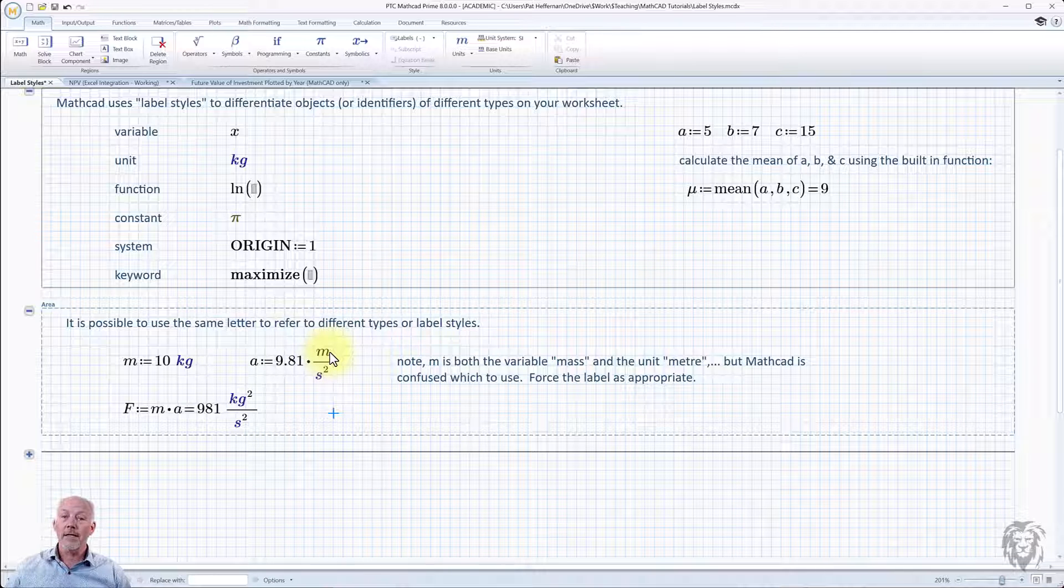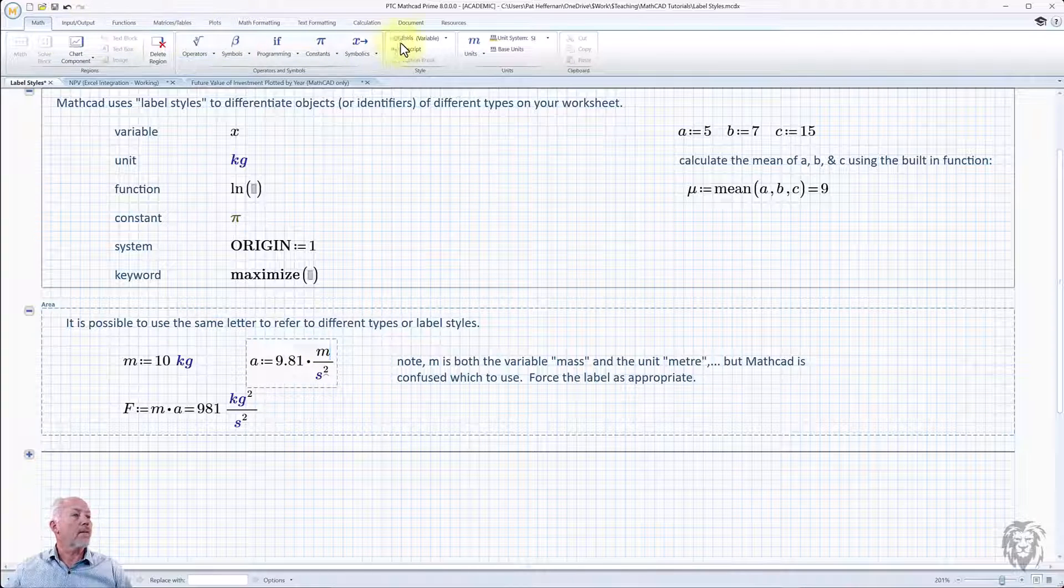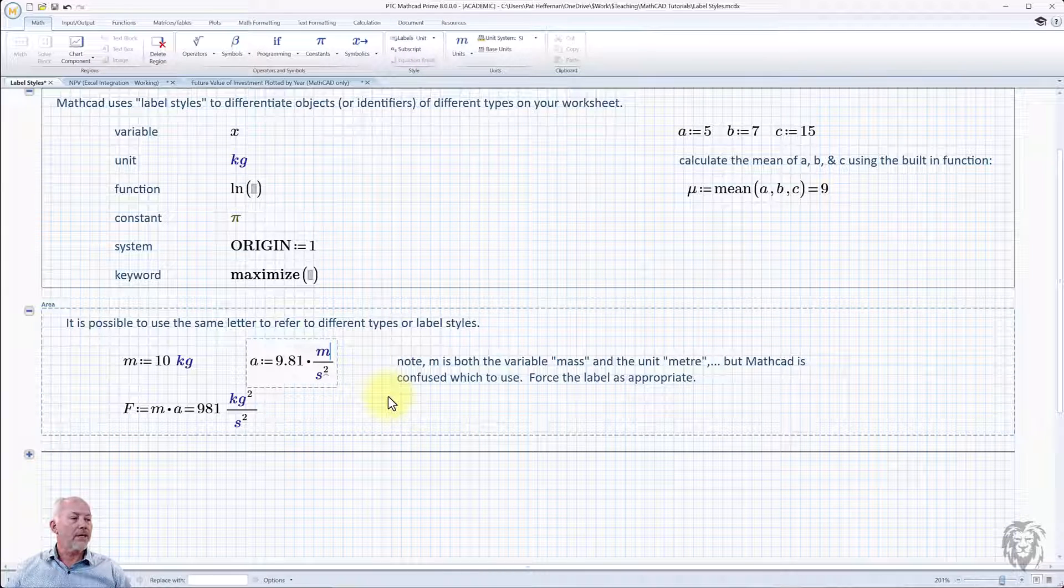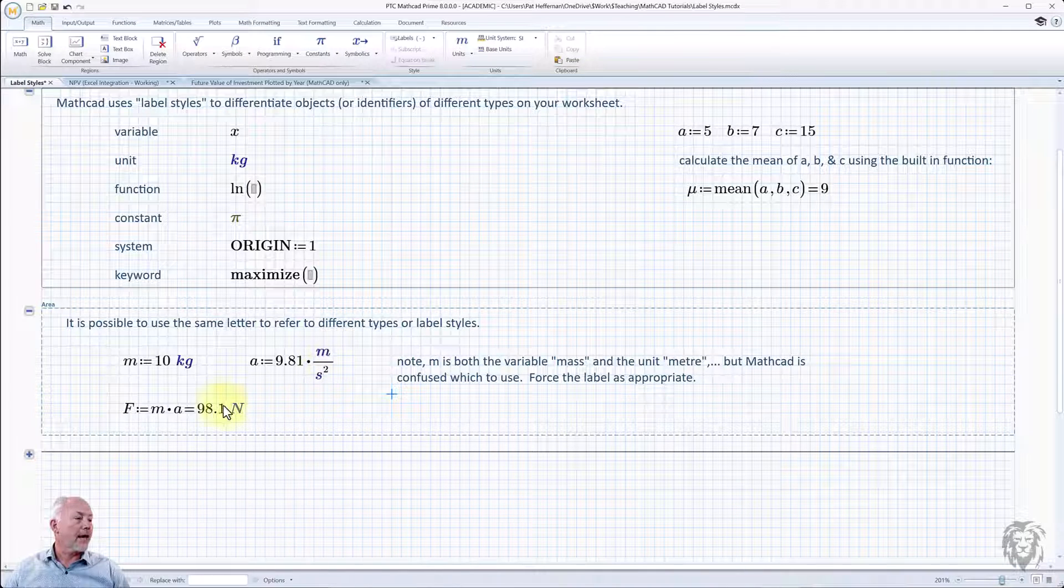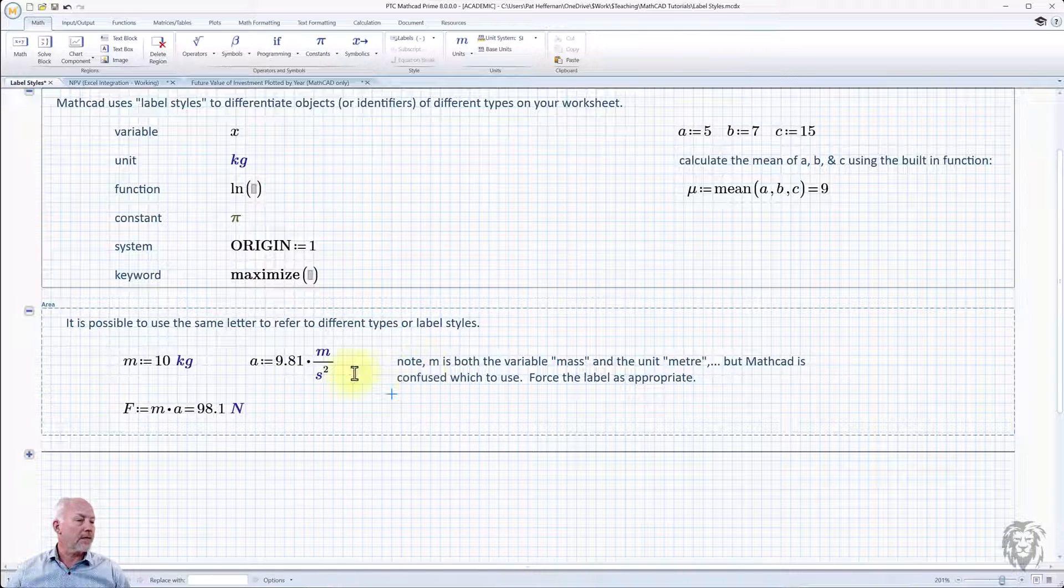So the easiest thing to do is when you see something like that, we click in beside it. We go up to our math, go over to labels, and in this case we say, oh, you're supposed to be a unit. And we do that. You see it updates the formatting, and now it interprets it as a unit, and our calculation is fixed, and we actually get the right answer. So particularly where you have m as a variable and m being a unit or anything like that, it's really important to make sure that it's being interpreted correctly. Otherwise, your calculations aren't going to be right.